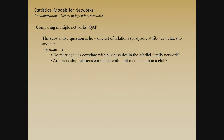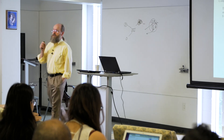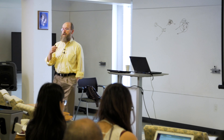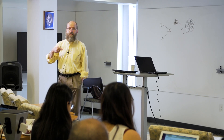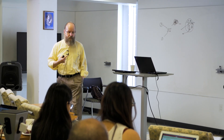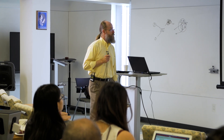Now I want to flip the script a little and think about networks as independent variables. If I want to use a network to predict something else, you can use the same kind of randomization process, and it ends up being a bit simpler. The standard version of this is called the Quadratic Assignment Procedure, QAP.